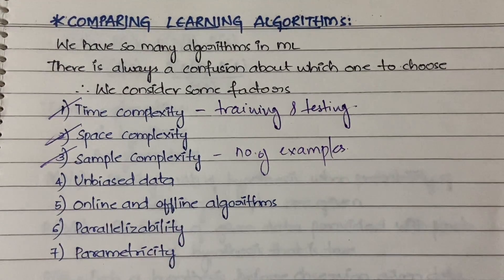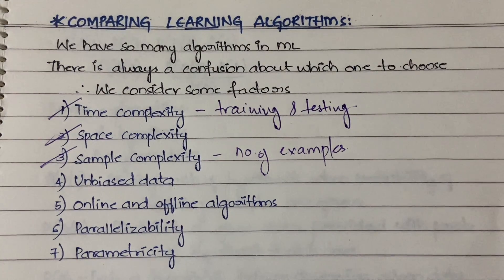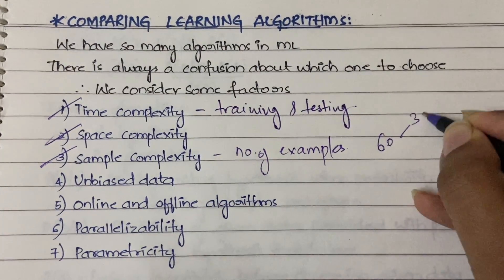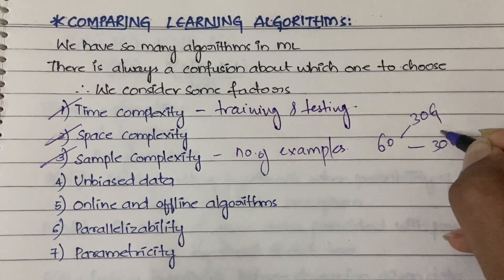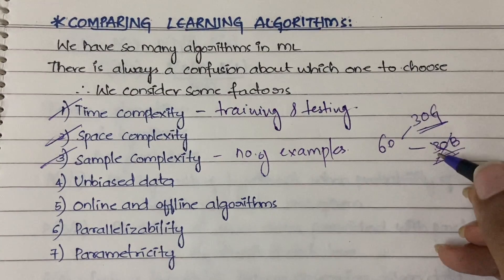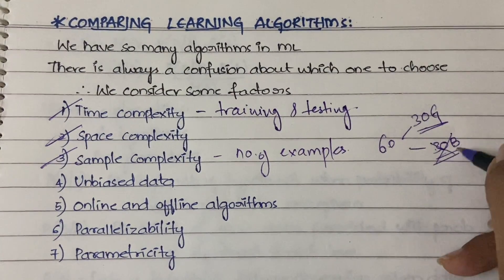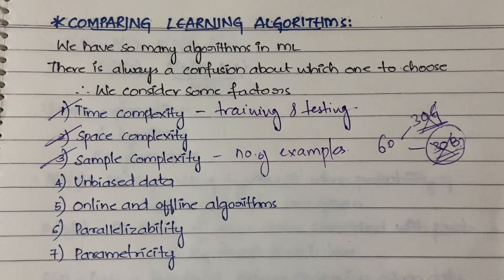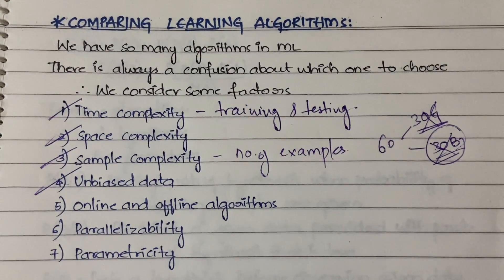Next is unbiased data. The machine should be able to get trained over unbiased data — unbiased meaning there should be no differences in how the data is treated. For example, in a class of 60 students with 30 girls and 30 boys, if you are learning only about boys and not considering girls, then it is said to be biased data. You are showing bias to a particular set. An algorithm should always take unbiased data and learn in general.